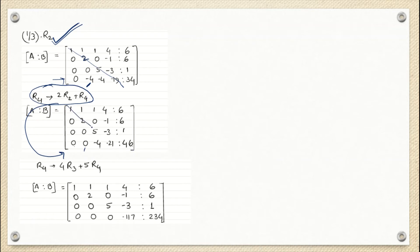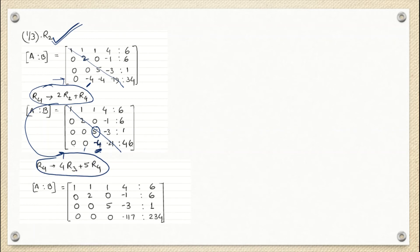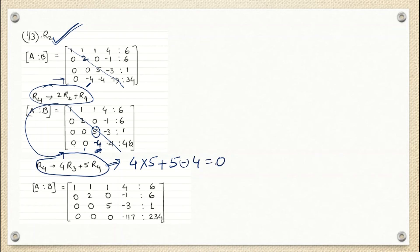Below the principal diagonal, there is only one element not yet zero. To make minus 4 zero, I take help of A33 and perform the row transformation: R4 = 4·R3 + 5·R4. That means 5×4 plus 4×5 with appropriate signs gives zero. The same operation is performed on the augmented column. Finally we get zero here as well.